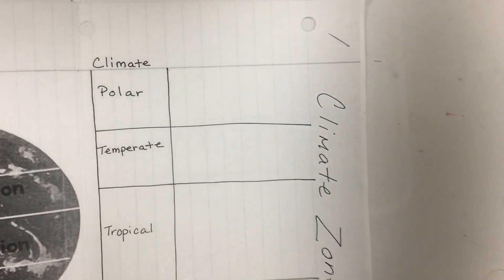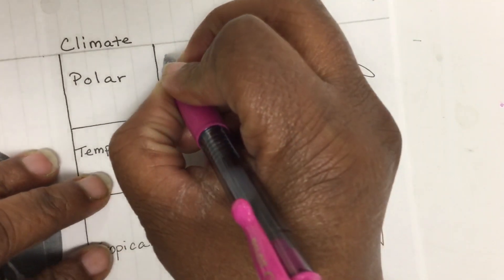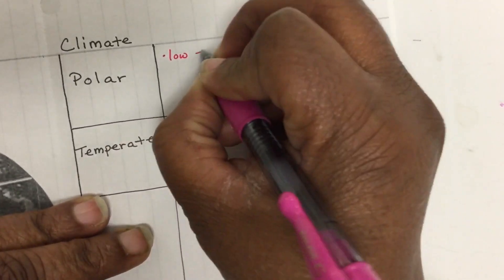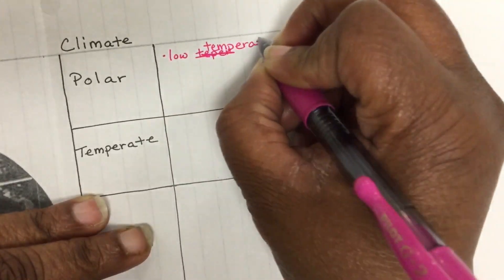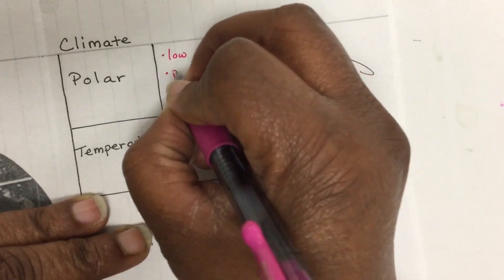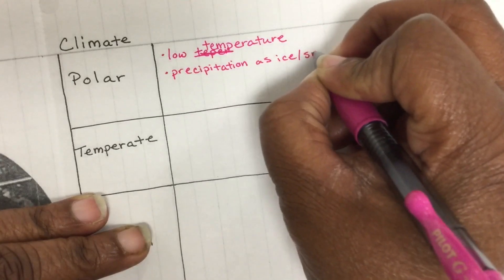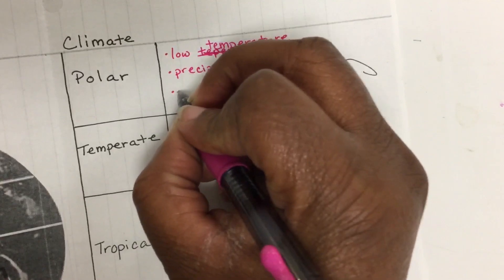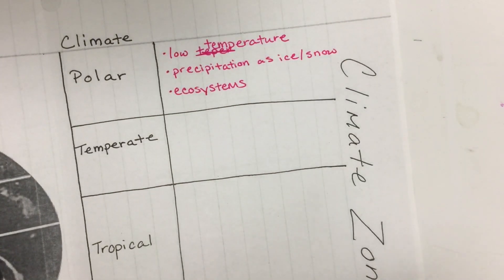First is polar. The polar climate zone has low temperatures and very low precipitation in forms of ice. There are two basic ecosystems. You would find the tundra here, like Antarctica, and the alpine, which is basically a forest.